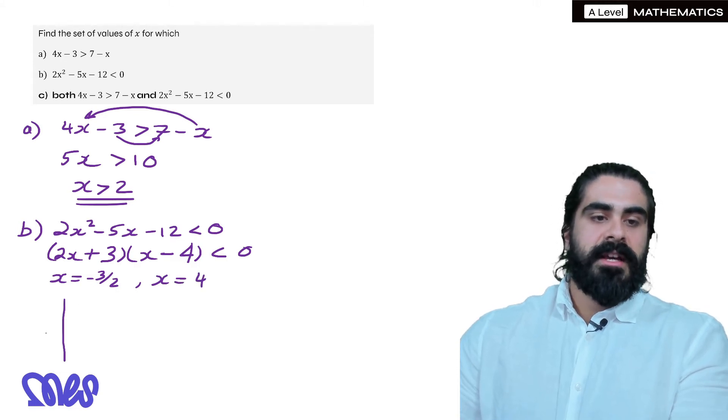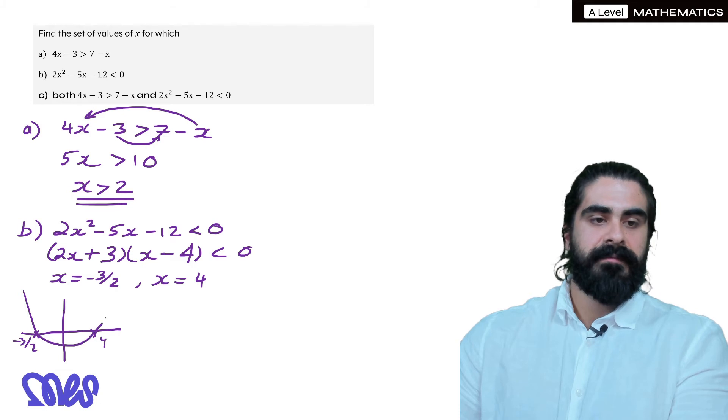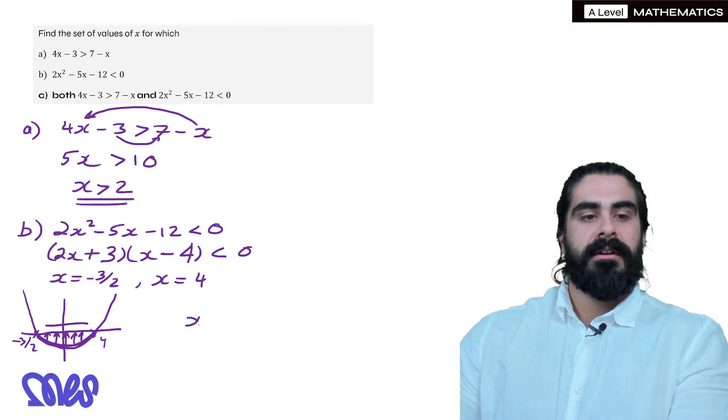And so when we do our little sketch, we have minus 3 over 2 and 4. So it's going to look something like this. And we want to know when is it less than 0. So that's the part of the quadratic below the x-axis. So we just draw lines up, and we can see the solution is anything between minus 3 over 2 and 4, and it can't equal the two numbers.